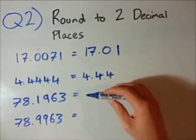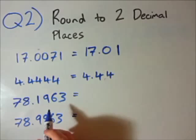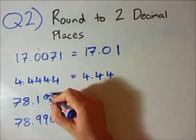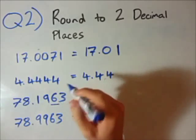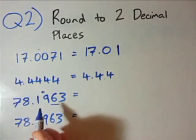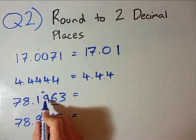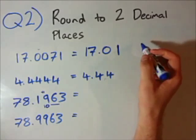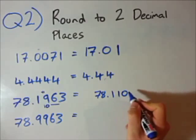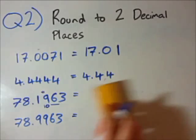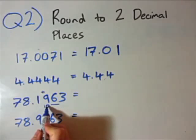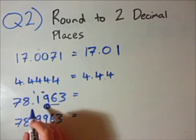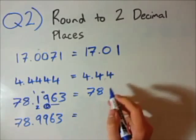Example 3: we're rounding this number to two decimal places. I look at the third number — it's 6, which is between 5 and 9. So I'm adding 1 to the second number after the decimal point. But if you add 9 and 1 you get 10. I can't have 10 there because that would make it three decimal places. Instead, I write a 0 and add 1 to the next column. 1 and 1 is 2, so my answer will be 78.20.